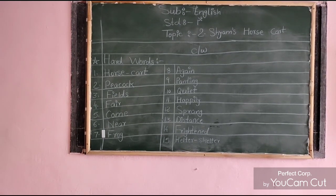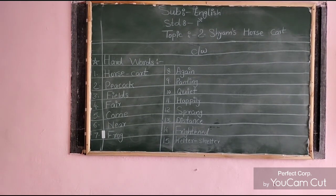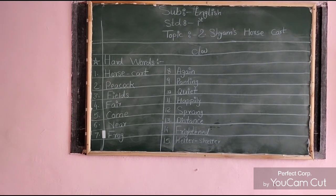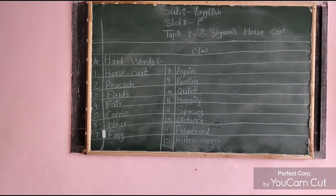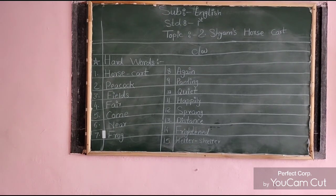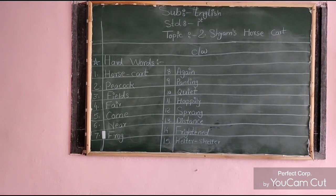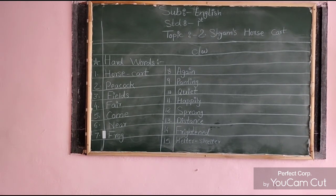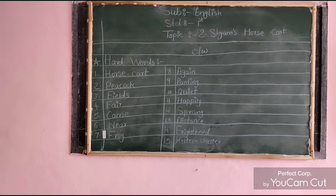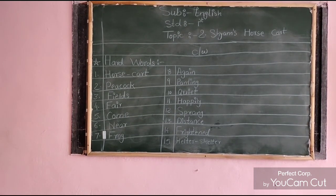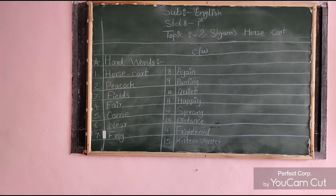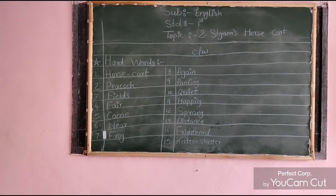So one by one I am going to explain the given hard words. 1. Horse Cart. 2. Peacock. 3. Fields. 4. Fair. 5. Come near. 6. Near. 7. Frog. 8. Again. 9. Panting.